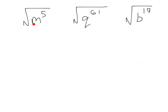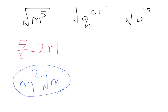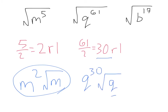Let's try a few of those. Here we have square root of m to the fifth. Five divided by two equals two with a remainder of one — two goes into four, but there's one left over. So my answer is going to be m squared, because two went in evenly twice, with that one extra left over, giving me square root of m. Now let's look at q to the sixty-first power. Sixty-one divided by two — two goes into sixty thirty times with one left over — so I'm going to have q to the thirtieth power times square root of q.